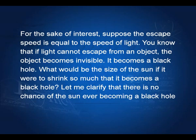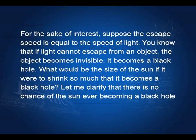Now consider an interesting case: suppose the escape speed equals the speed of light. That means light itself cannot escape — it is bound to that object and cannot be seen from outside. Such an object becomes black and is called a black hole. We are saying that the escape speed equals the speed of light, so all other things are bound and light cannot escape, making the object invisible from outside.